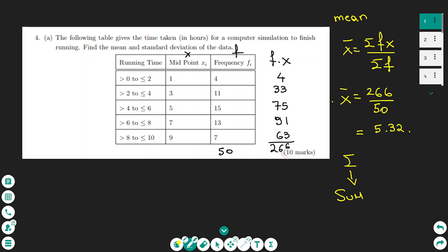This number goes above the line. The numerator of the fraction is 266, and according to the formula is divided by sigma F. The sigma F, I add the frequencies, and the total is 50. This number goes as the denominator of the fraction. So the mean is 266 over 50, which is 5.32.